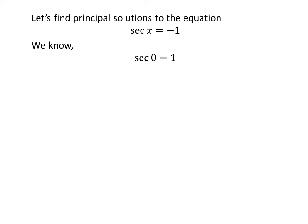We know the value of secant of 0 is 1. We also know the famous trigonometry identity: secant of π minus A equals minus secant of A.